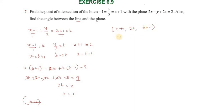So t equal to 1. Therefore: x equal to 1 plus 1 equal to 2, y equal to 2t equal to 2, and z equal to t minus 1 equal to 1 minus 1 equal to 0. So the intersecting point is (2, 2, 0).